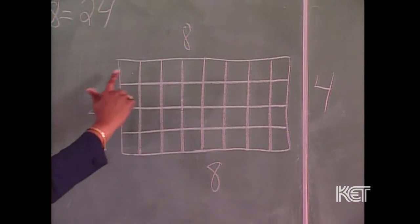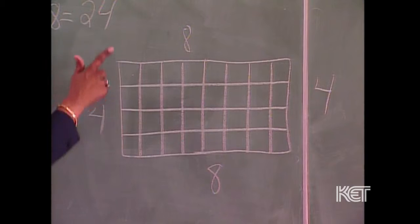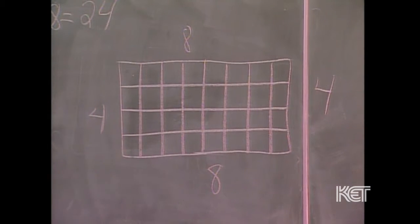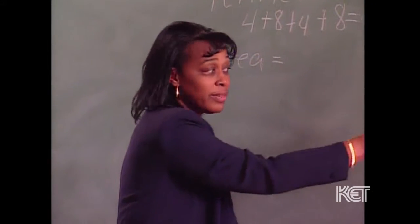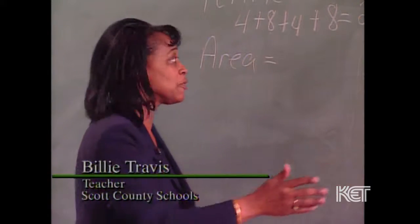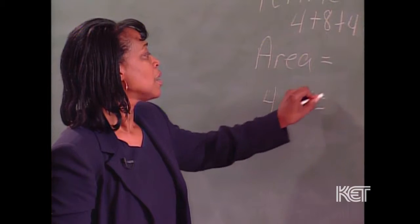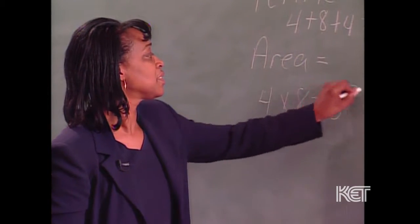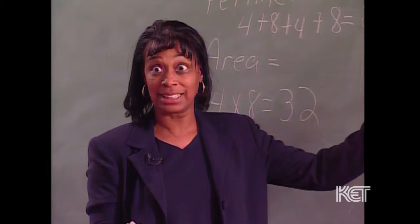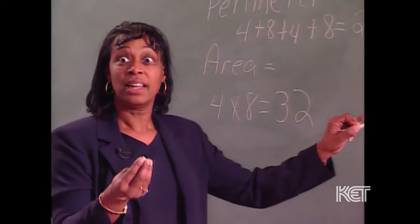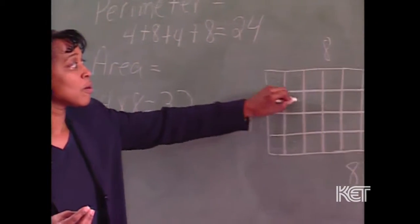This was eight — remember I said it was eight across? One, two, three, four, five, six, seven, eight. This is four: one, two, three, four. We're dealing with length times width. We've got our eight times our four. We know that's 32. I didn't assign units to this, but let's just pretend this was feet — this is 32 square feet.